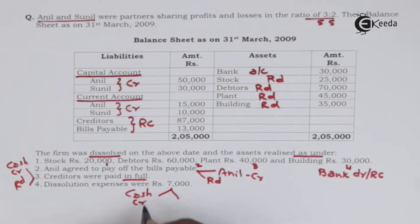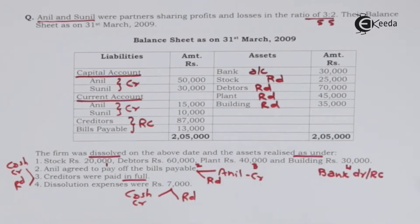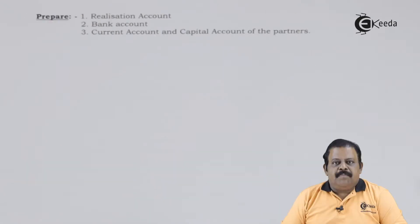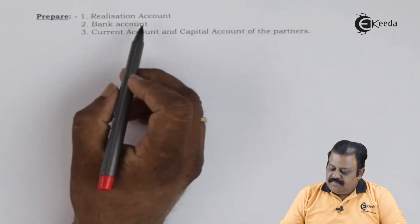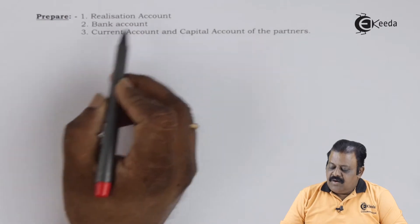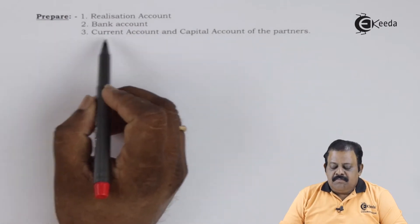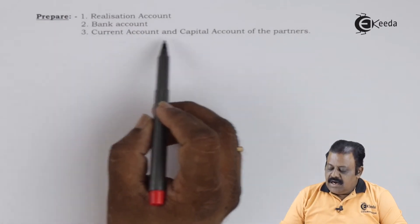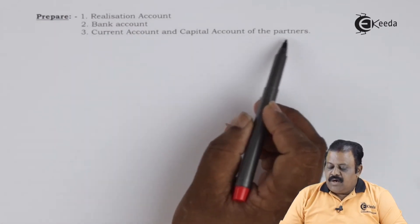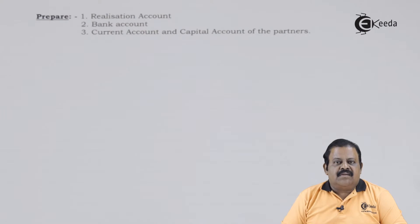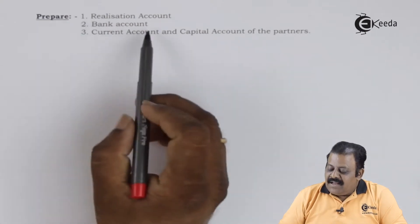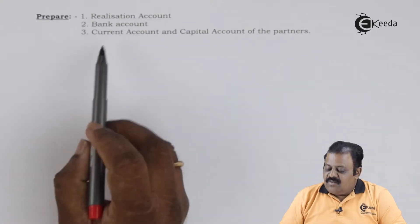Dissolution expenses of 7,000 were paid — cash is credited and realization account is debited. We are required to prepare the realization account, bank account, current account, and capital account of partners.